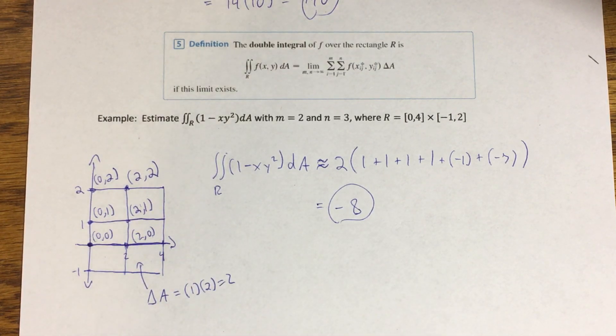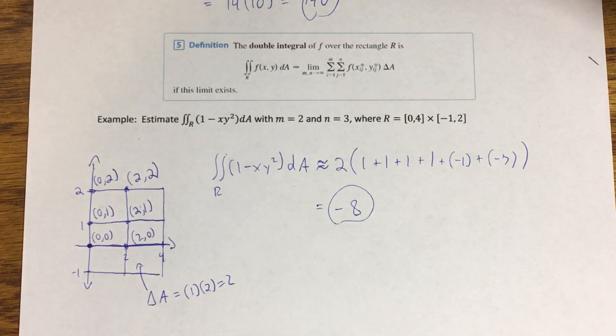It's just kind of your choice how you want to choose those, unless the problem tells you to do it a specific way. One thing I do want to point out: the answer that I got was negative eight, and that might initially seem a little bit confusing because the double integral is supposed to represent a volume. Volume, typically you would think of as a positive number, not a negative one.